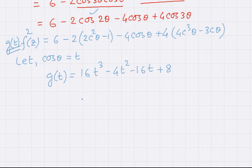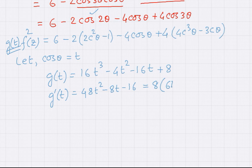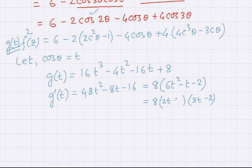Now we can apply the concept of maxima and minima for this function g(t). We go for the derivative g'(t), which comes out to be 48t² minus 8t minus 16, which is nothing but 8 times (6t² minus t minus 2). We can easily find the critical points by factorizing the derivative, giving us factors (2t + 1)(3t − 2).